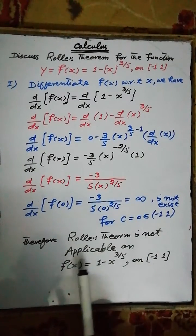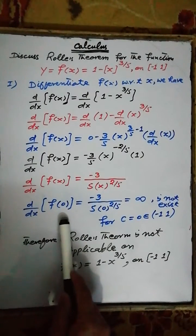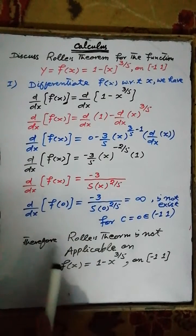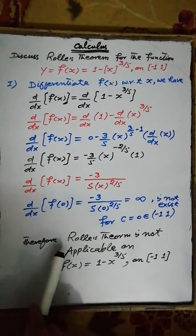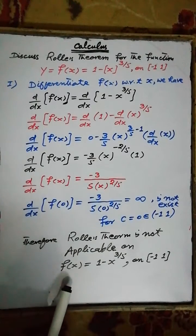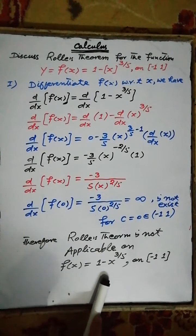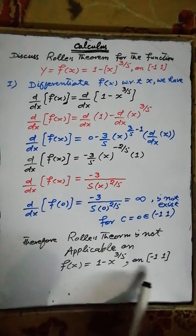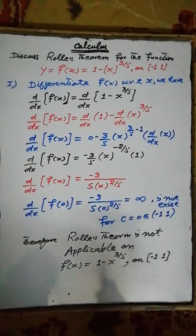Therefore, Rolle's theorem fails to hold. Therefore, we can conclude that Rolle's theorem is not applicable for the function f(x) = 1 - x^(3/5) on the closed interval [-1, 1].